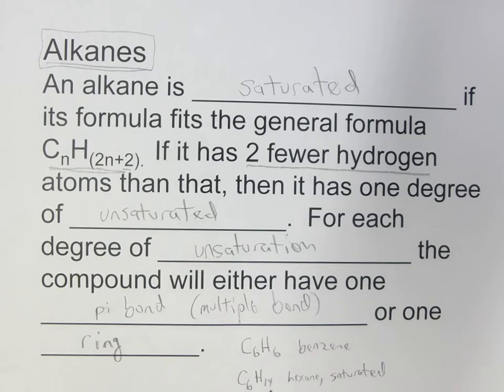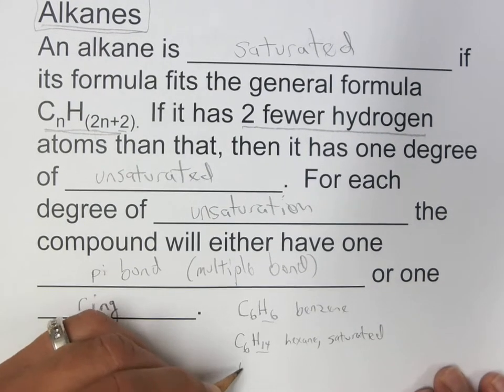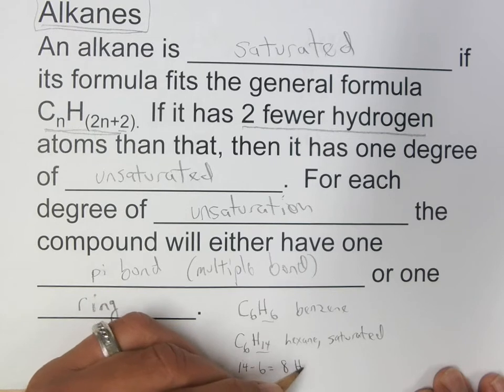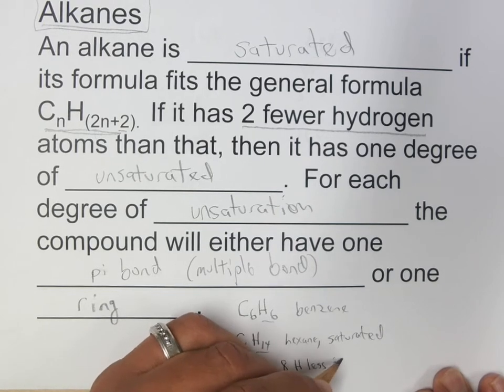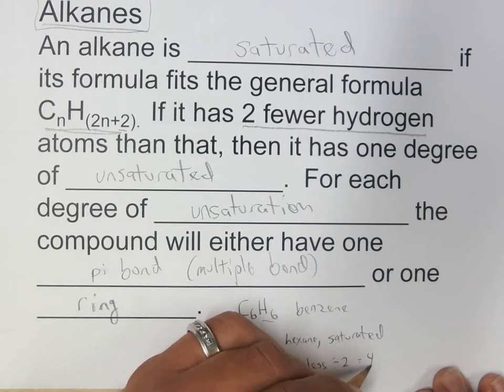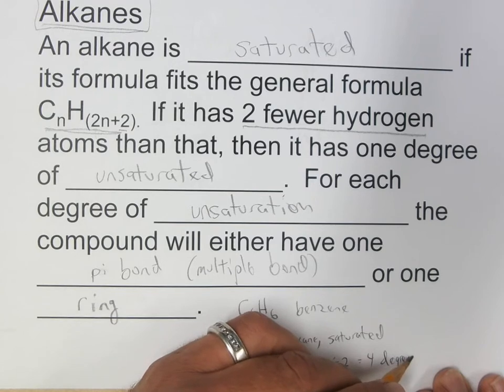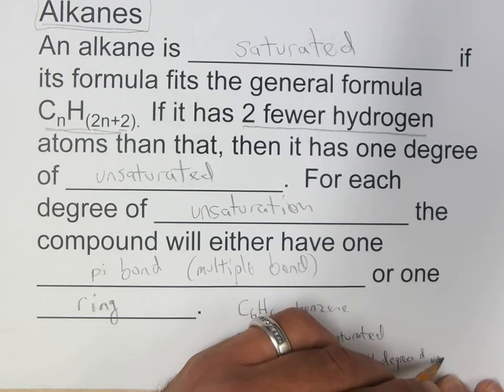So if we compare the 14 to the 6, we find 14 minus 6 equals 8 hydrogens less than saturated for benzene. And then if we divide by 2, we get 4 degrees of unsaturation.